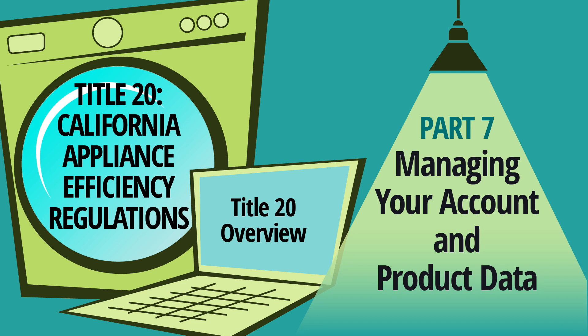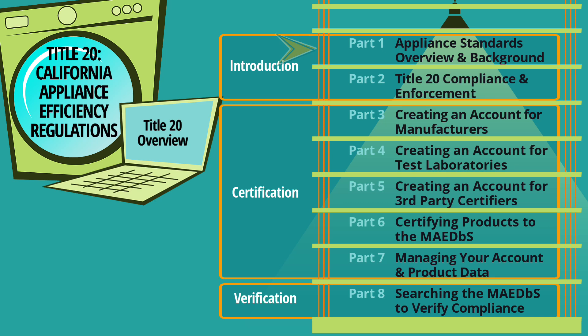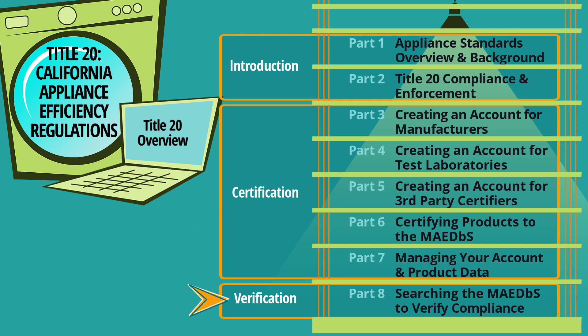Welcome to Part 7 of the Energy Code ACE Title 20 Compliance Training Series. There's a total of eight videos in the series focusing on an introductory overview of key aspects of the appliance efficiency regulations, what you need to know and do to certify products so they comply with the regulations, and how to verify that specific products comply. Be sure to check out the parts that apply to you. You can find them on the Energy Code ACE YouTube channel or on the training page of the Energy Code ACE website.